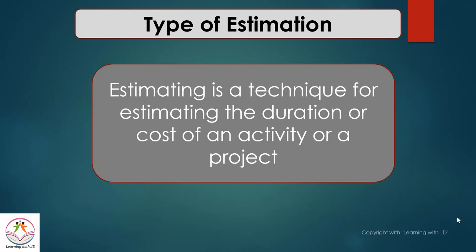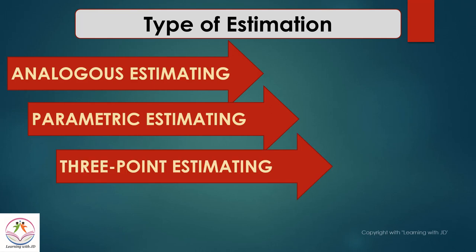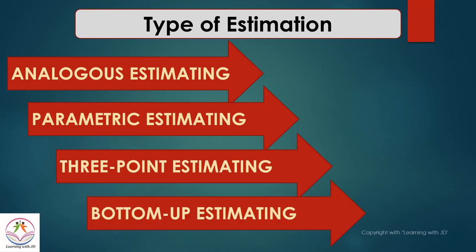Welcome back to Learning with JD. In today's session we are going to talk about the types of estimation. Estimating is a technique for estimating the duration or the cost of an activity or a project. When you are in your planning stage, there are various tools and techniques used for estimating. There are four kinds of estimation techniques: analogous estimation, parametric, three-point estimation, and bottom-up estimation.